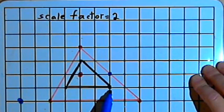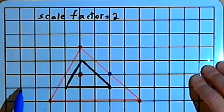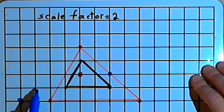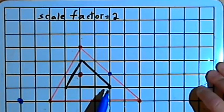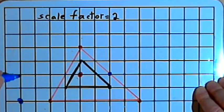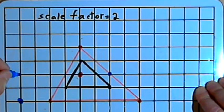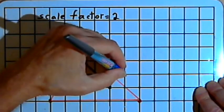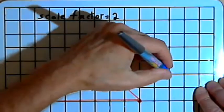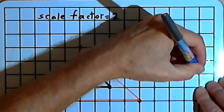For the lower right angle, I have to go up one unit and over six from the center of dilation. So for the dilated image of that, I'll go up two units and over twelve — two times six.